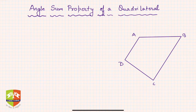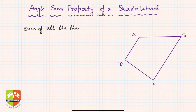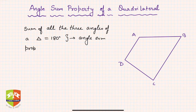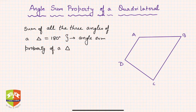The angle sum property of a triangle states that the sum of all three angles of a triangle is equal to 180 degrees. Now we are going to study the angle sum property of a quadrilateral.